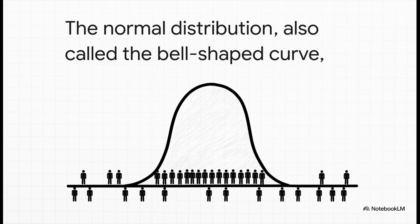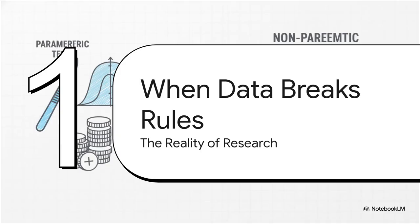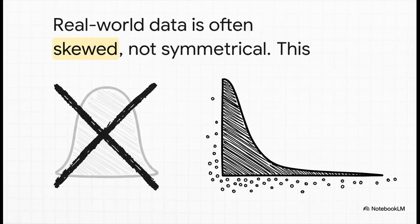This perfect world is exactly where parametric tests shine. But we don't live in a perfect world. The reality of health research is often messy. So what happens when our data breaks the rules — when it just refuses to fit into that neat little box? Instead of that perfect bell, real-world data can often look more like this: skewed, with a long tail stretching out to one side. Imagine a study on a new drug where most patients get a little better, but a handful have amazing off-the-charts results. Those few incredible outcomes pull the whole average way over, creating that exact shape. And suddenly, that precision scalpel might not be the right tool for the job anymore.